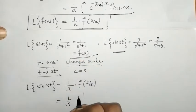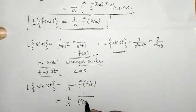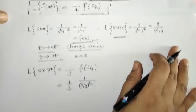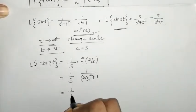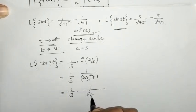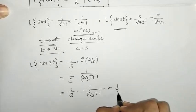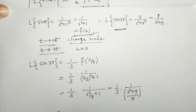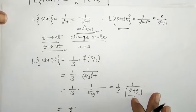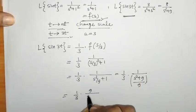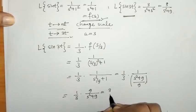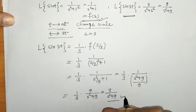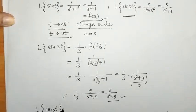Substituting s/3 into F(s): F(s/3) = 1/((s/3)² + 1) = 1/(s²/9 + 1). Multiplying by (1/3), we get (1/3) · 1/(s²/9 + 1). Taking 9 into the numerator gives 9/(3(s² + 9)) = 3/(s² + 9). So the Laplace of sin(3t) is 3/(s² + 9), which matches the standard result.